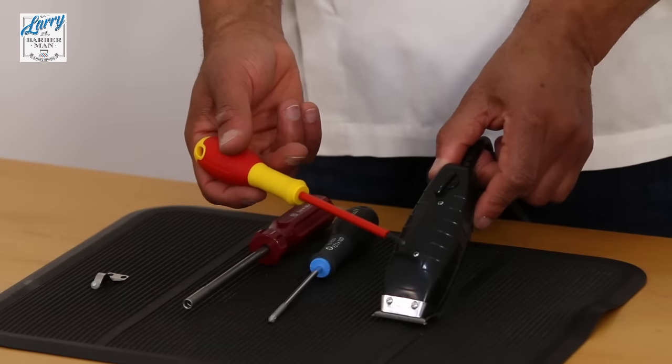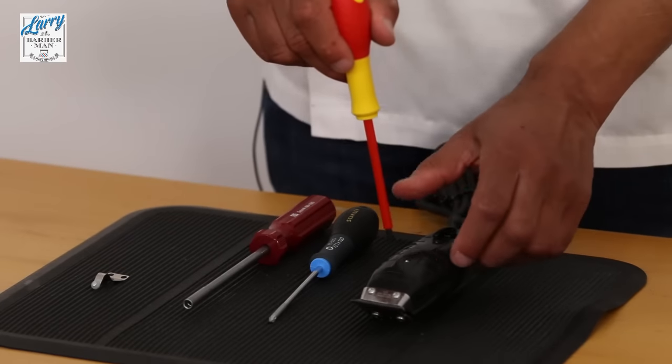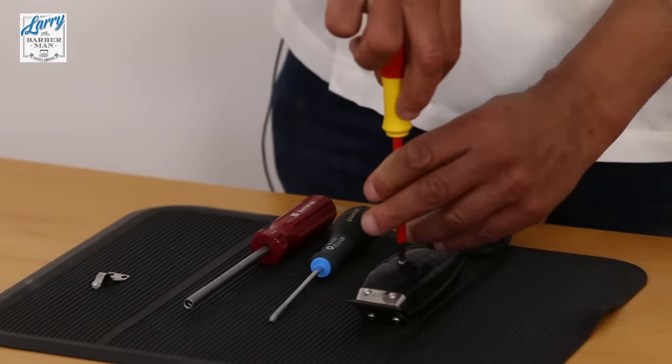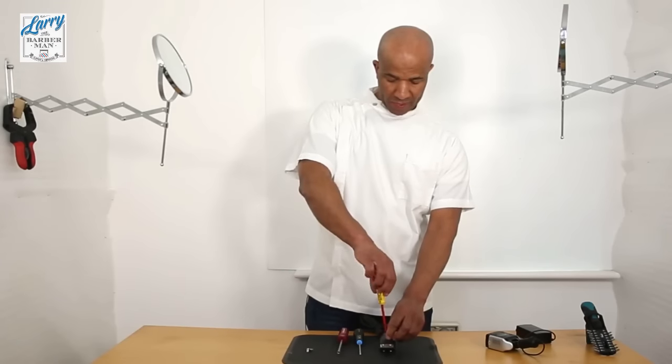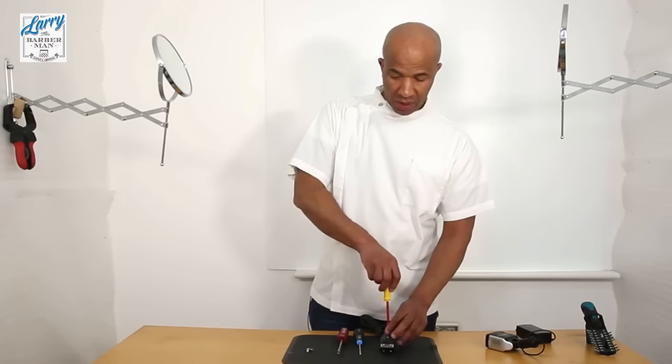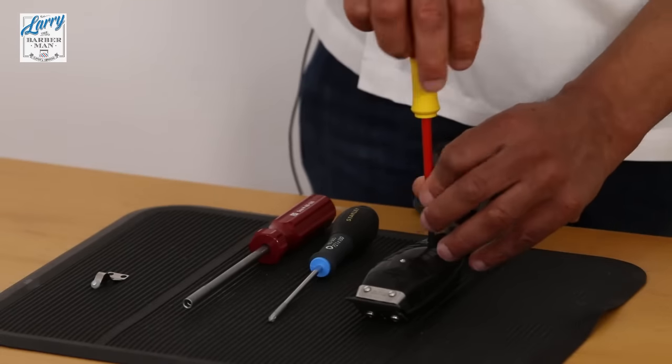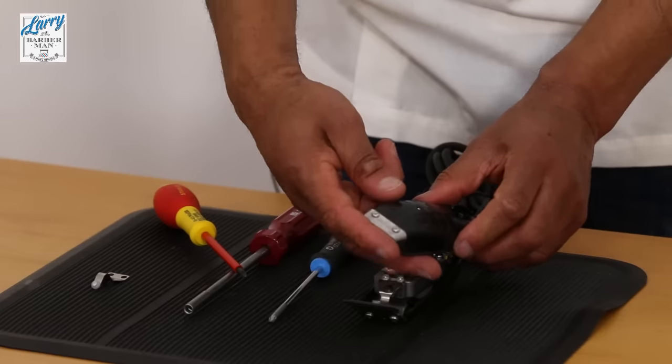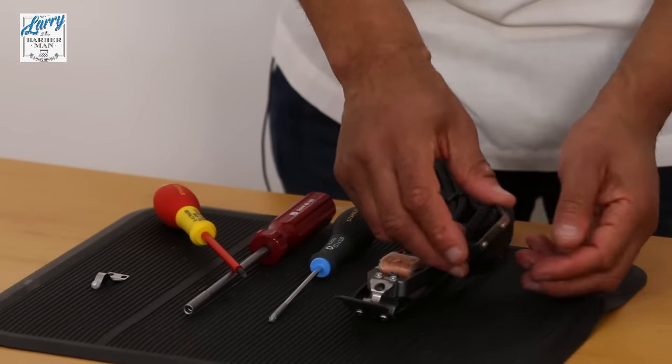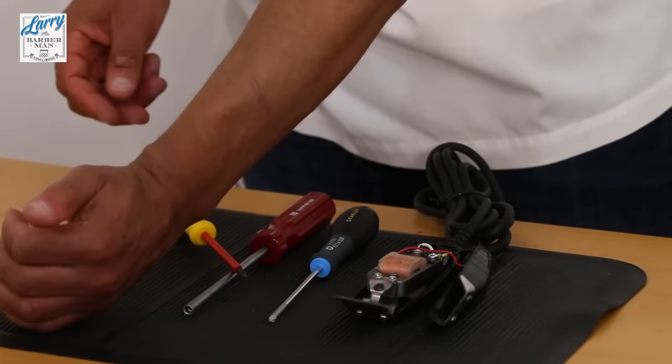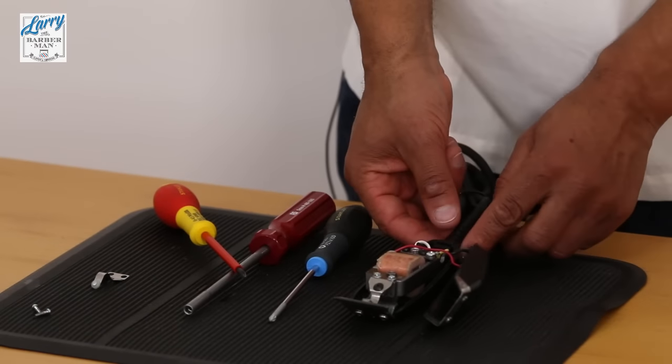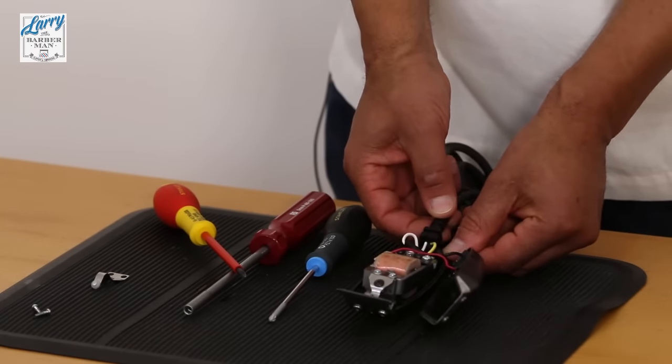First and foremost, US model, we need to unscrew these two screws here. That's one, two screws. Just fold it out gently, put your two screws in a safe place preferably on the corrugated mat.